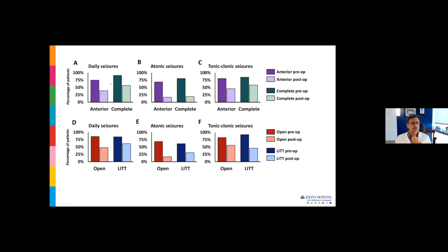This is about the last slide. Looking at daily seizures: anterior versus complete, pre-op, post-op. You see a reduction in daily seizures with anterior, a reduction with complete that's pretty similar. Drop seizures, similarly—anterior versus complete, big drop off in atonic seizures, drop off with tonic-clonic seizures. Looking at open versus lit versus anterior or complete, pre-op, post-op. Not a big difference between open and lit, but definitely a treatment effect before and after any of the treatments.